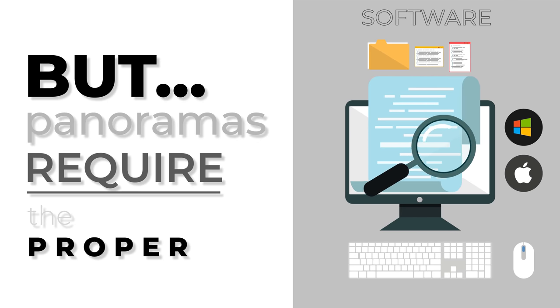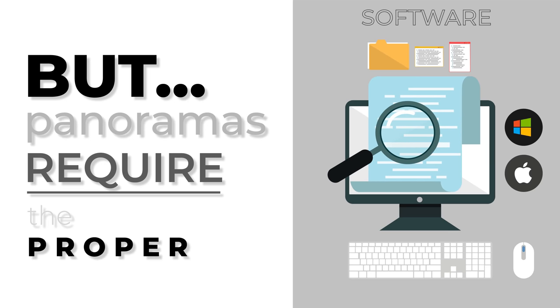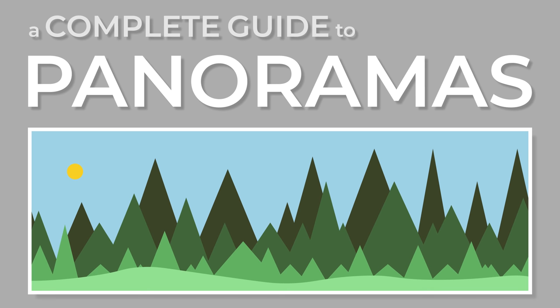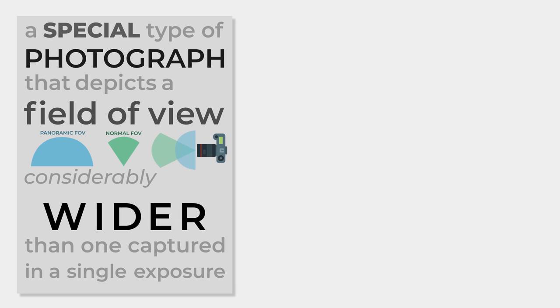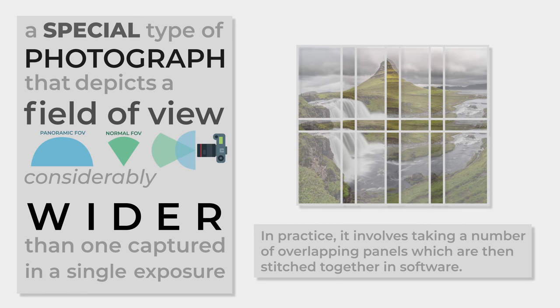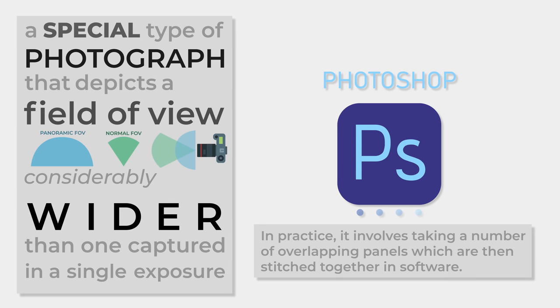In this guide, I will teach you how to construct panoramas, explaining the process I use to create these stunning images. First, briefly — what is a panorama? A panorama is a special type of photograph that depicts a field of view considerably wider than what could be captured in one exposure. This involves taking a number of exposures that capture overlapping sections of a scene, then stitching those panels together in computer programs.